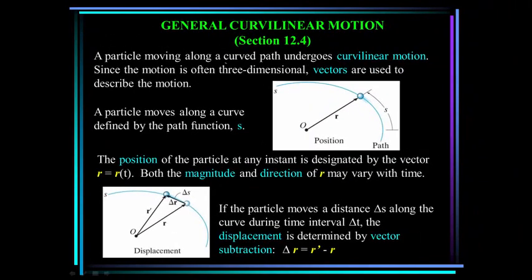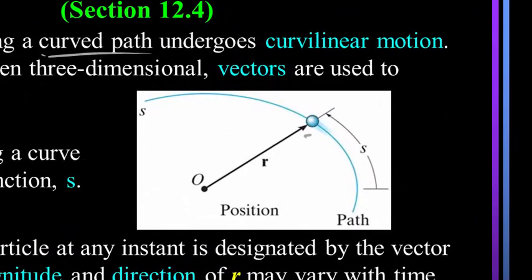A particle moving along a curved path undergoes curvilinear motion. We often use vectors to describe this motion. We have this particle P traveling along a path defined by the path function S. The position of the particle at any instant is designated by the vector R, which is a function of time.